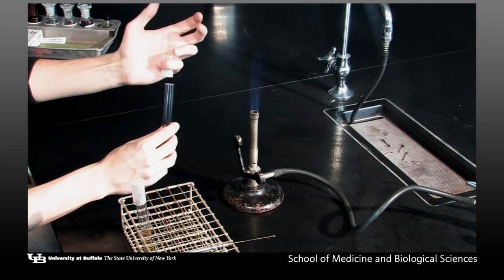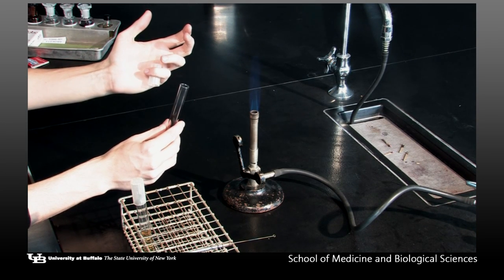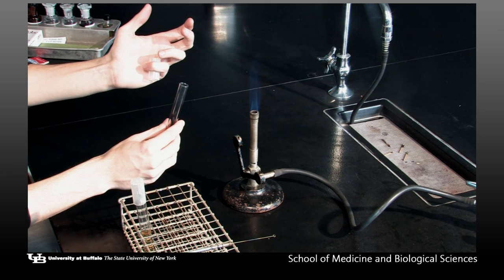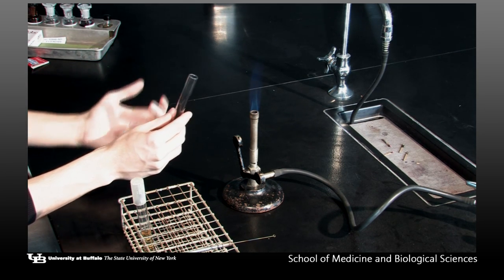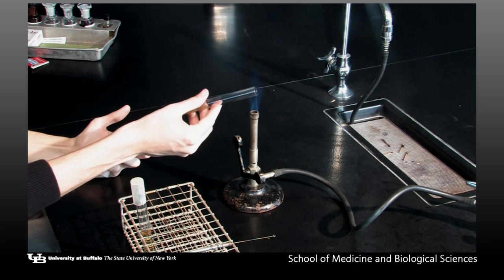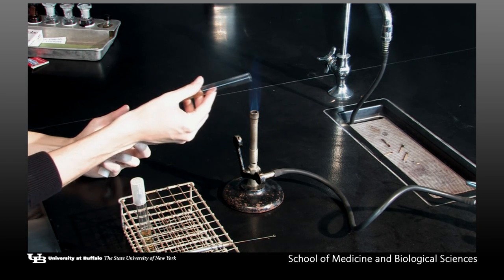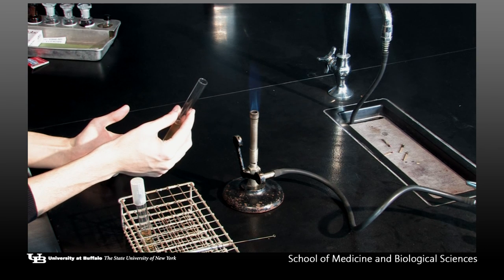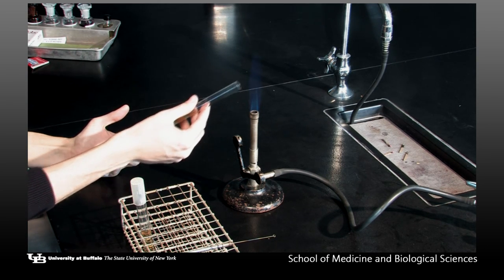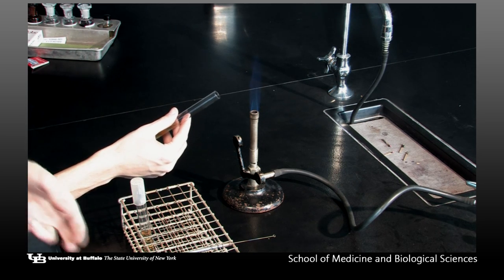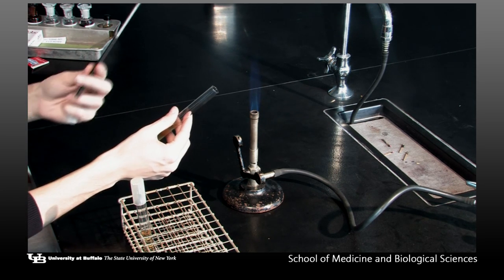Grasp the tube's cap with your little finger and remove it by pulling the tube away from the cap. Hold the cap in your little finger during the transfer. Flame the mouth of the tube by passing it through the Bunsen burner flame. Hold the open tube at an angle to prevent airborne contamination.